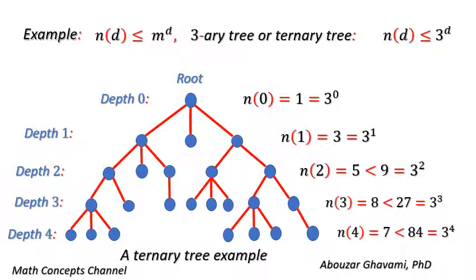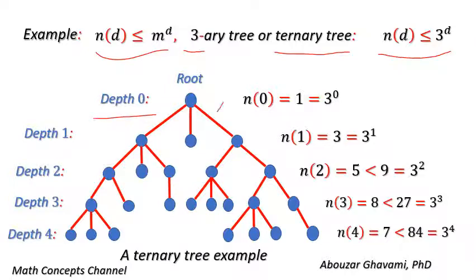Let us consider an example for a ternary tree. In a ternary tree, we have M equals 3. We show that N(D) is less than or equal to 3 to the power of D. At depth 0, we have only one node, that is the root. Thus, N(0) equals 1, and 1 equals 3 to the power of 0. Therefore, N(0) equals 3 to the power of 0.